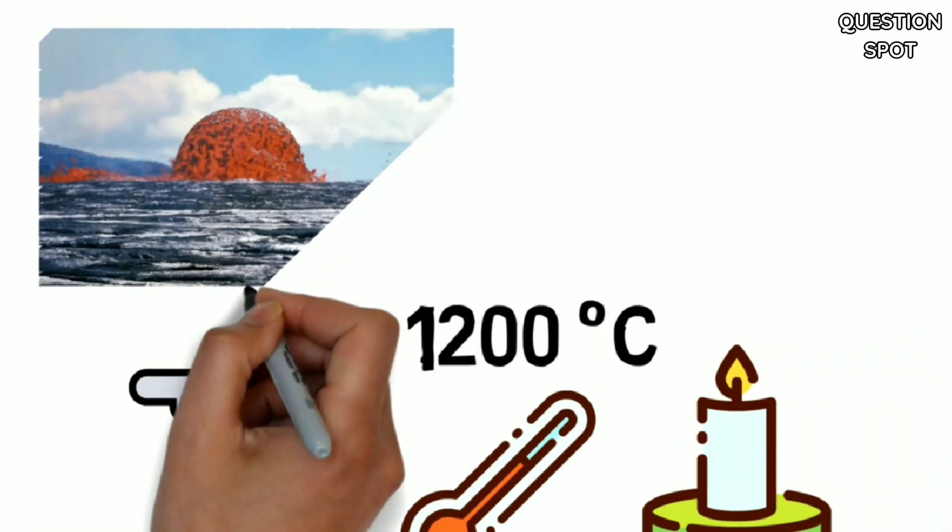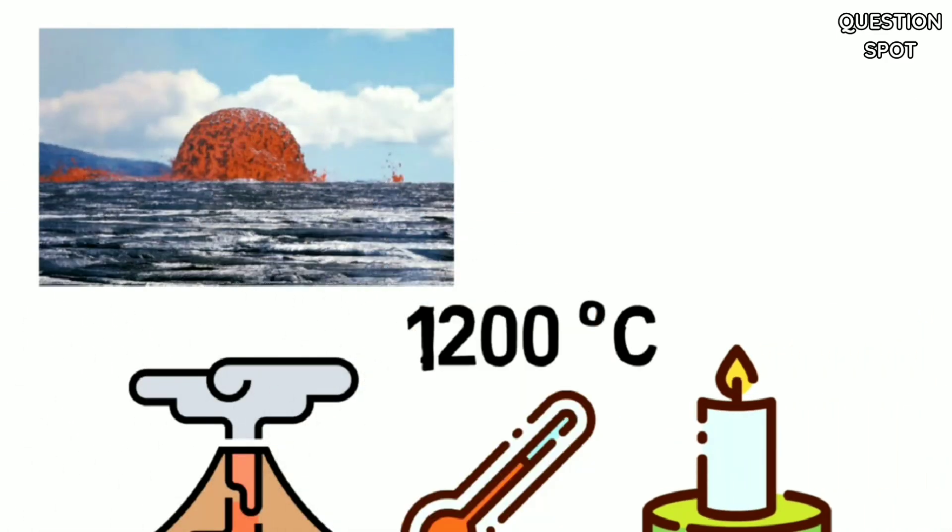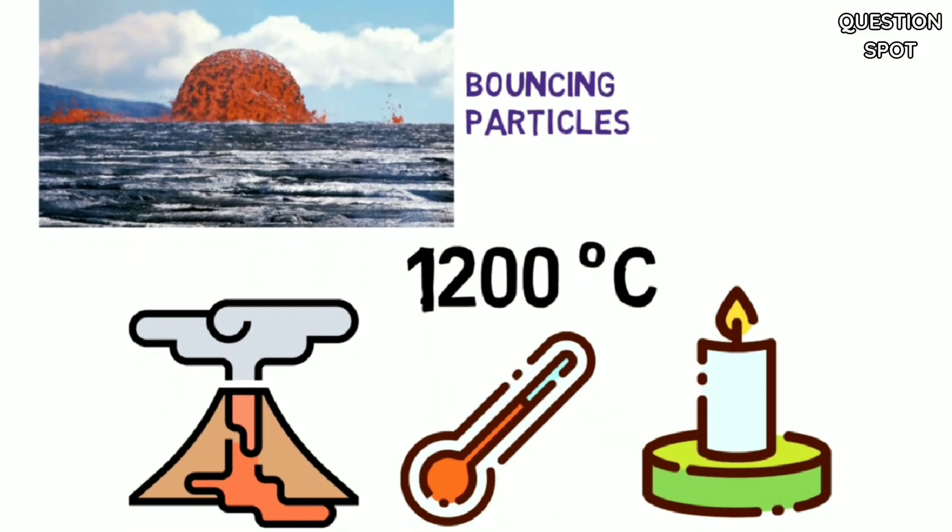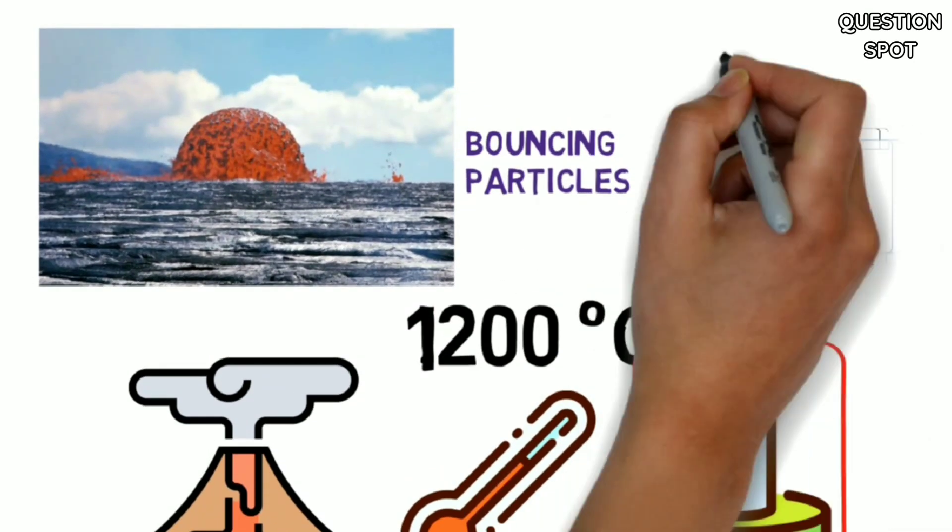On the other hand, a big blob of lava contains many more bouncing particles than a small candle flame, so it has a lot more heat energy.